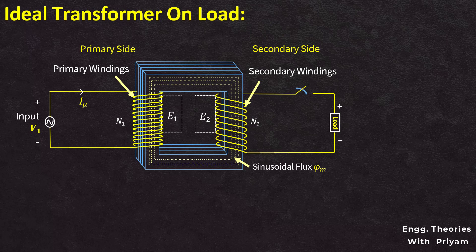If the switch is closed, then the secondary of this ideal transformer is connected to the load, and this load can be resistive load or R load, inductive load or RL load, and capacitive load or RC load in nature. Then there will be a current in the load as well as in the secondary winding. Depending upon the load, the magnitude of the current flowing through the load is I2, and the phase angle between the voltage across the load V2 and the current flowing in the secondary I2 will be different as the load is varied from resistor to inductor and finally to capacitor.